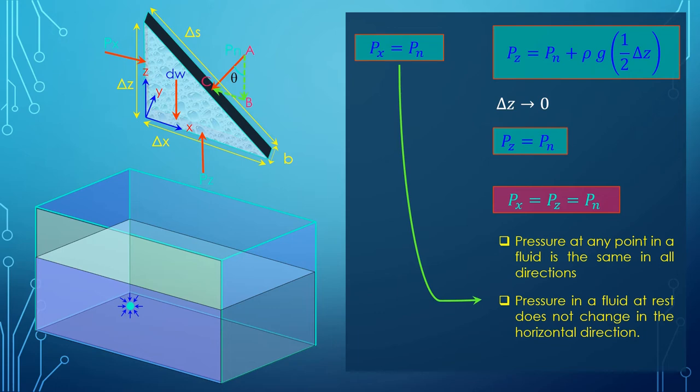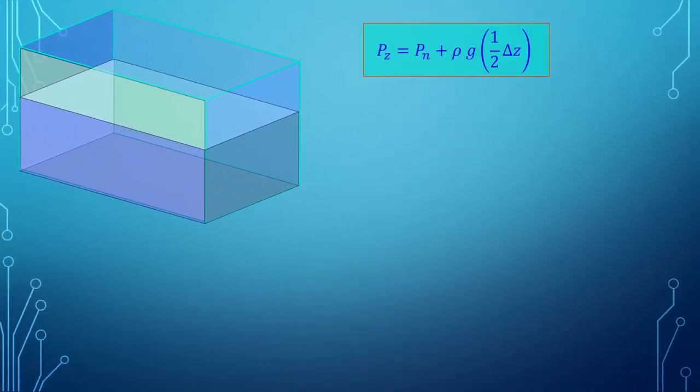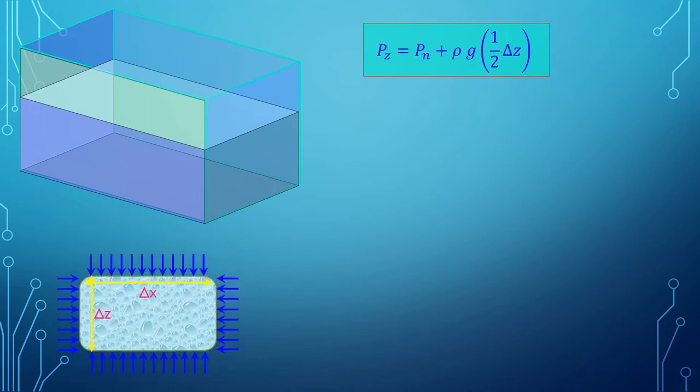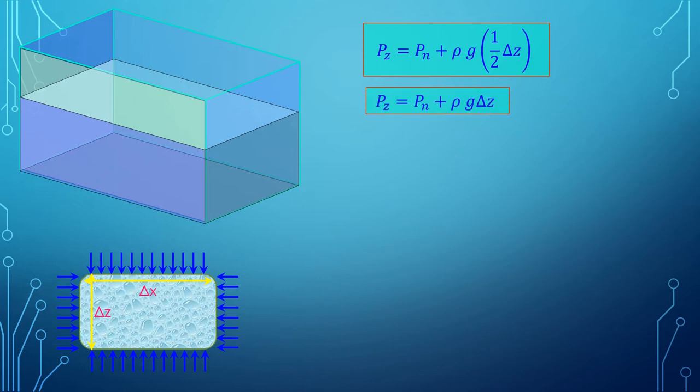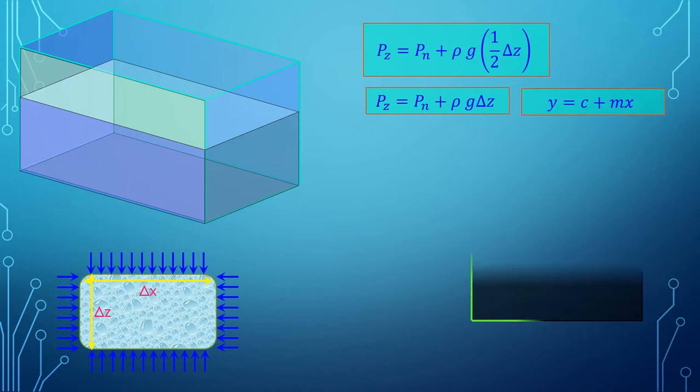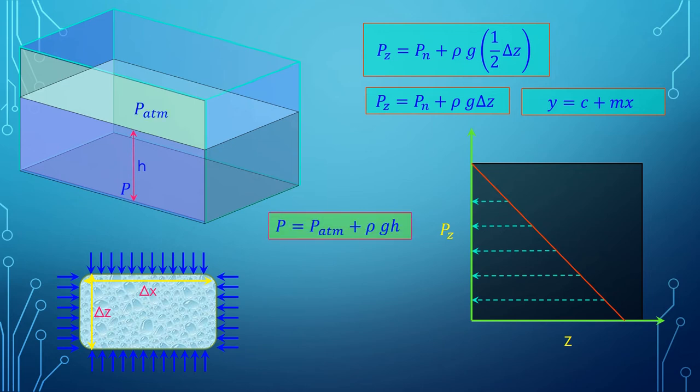We saw pressure in a fluid at rest does not change in the horizontal direction, but it varies along the depth. Now instead of a wedge shaped element, if we take a rectangular element, the expression becomes pz equal to pn plus rho g delta z. This becomes an expression of the type y equals mx plus c. So pressure varies linearly along the depth. If we have a point p at a depth h from the water surface, then the pressure at this point is p atmosphere plus rho g h, where rho g h is the gauge pressure.